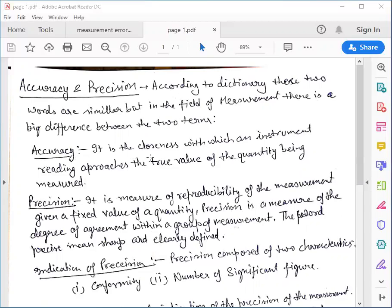Accuracy is basically closeness with which an instrument reading approaches the true value of the quantity being measured. This is called accuracy. It means how much we are close to the true value.